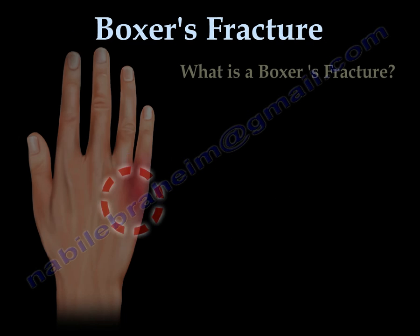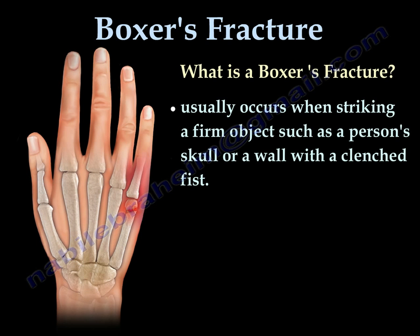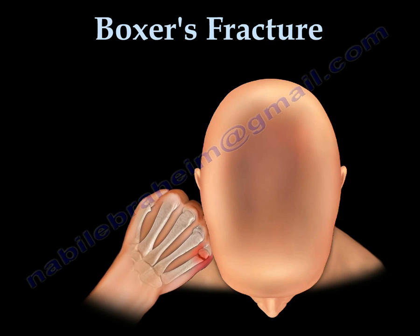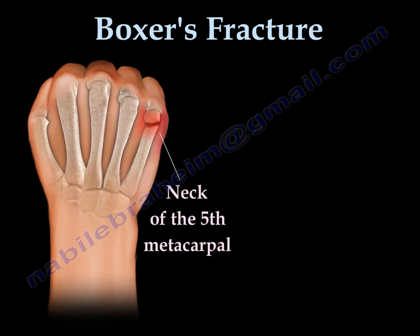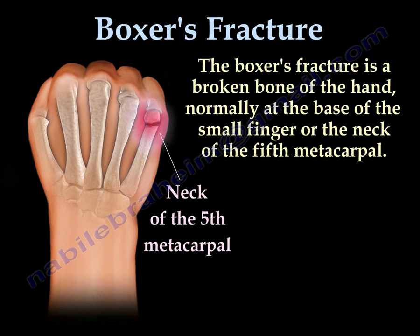Boxer's Fracture. What is a boxer's fracture? It usually occurs when striking a firm object, such as a person's skull or striking a wall with a clenched fist. Here you can see a person hitting the skull or head of another person, breaking the neck of the fifth metacarpal bone. That break usually occurs at the base of the small finger, and we call it the boxer's fracture.